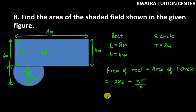L into b is 8 into 4 plus pi r square. Pi is 22 over 7 and bottom we have 2. R square is 2 into 2, so you can cancel 2 with 2.